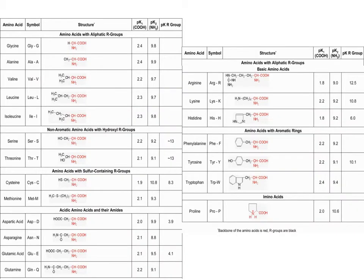Here are the 20 amino acids showing all the side chains as the R groups. What you need to know for this course and all exams is the names of the amino acids, the symbols — both three-letter and single-letter codes — and the pKs of the carboxy and the amine as well as the R groups.